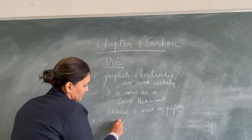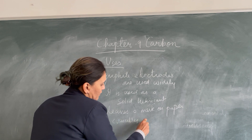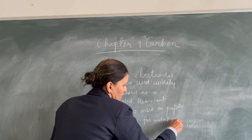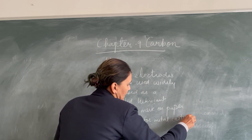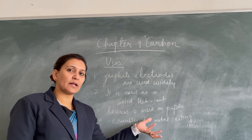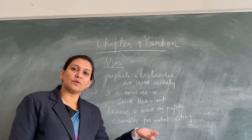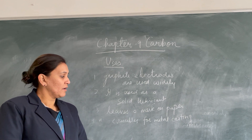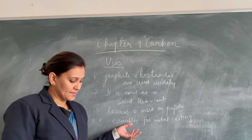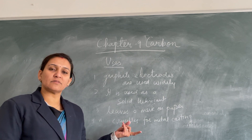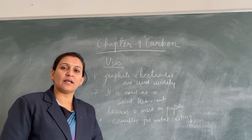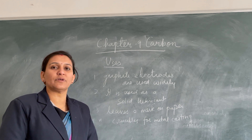Fourth, graphite is used for making crucibles for metal casting. Crucibles are cup-like structures used in the casting of metals — that is, taking a particular metal and converting it into different molds, like metal coins or other shapes. So graphite is used to make the vessels in which metal is cast and converted into different forms.